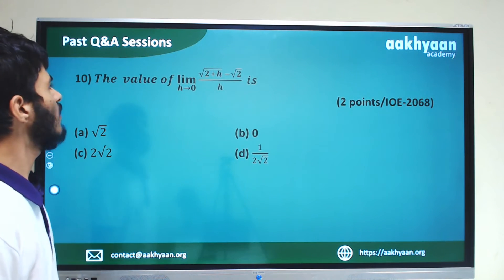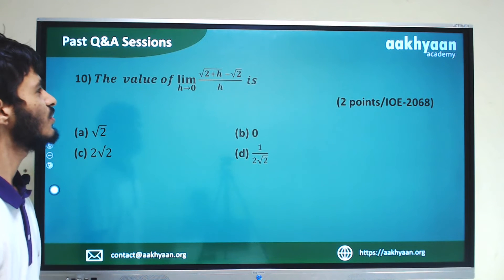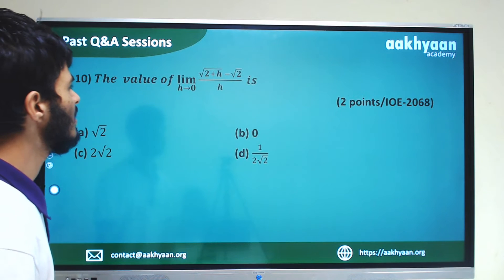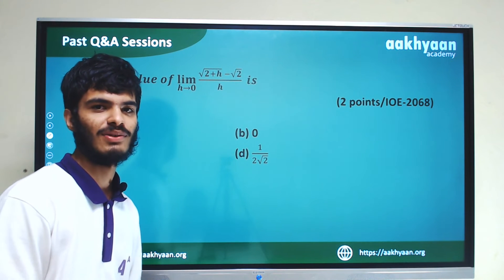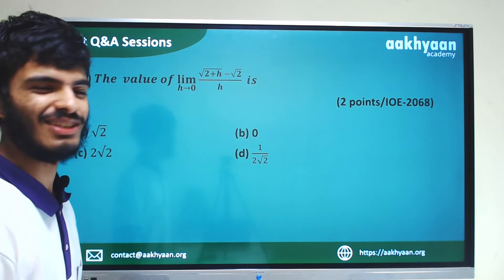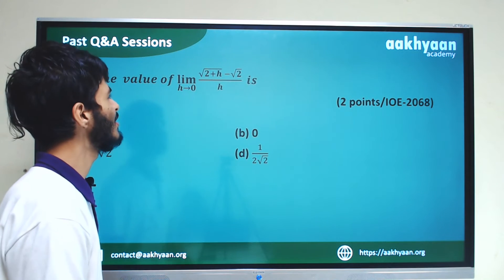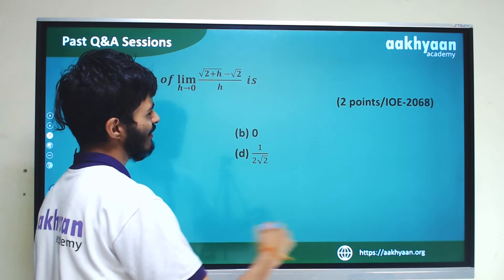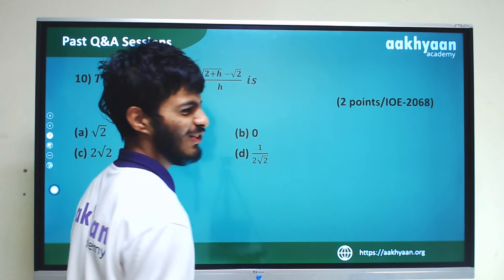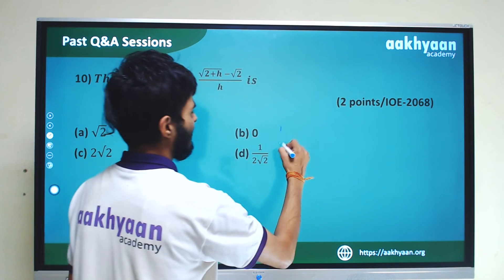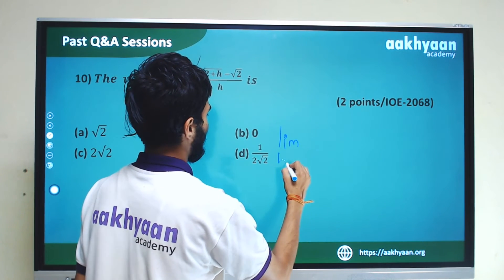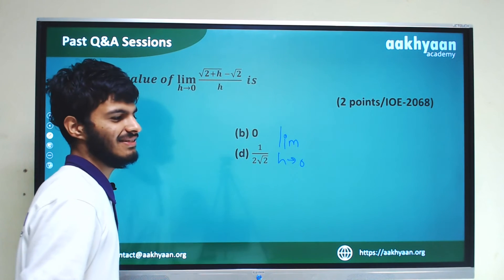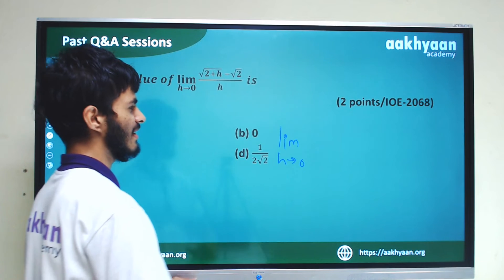The next problem: limit x tends to 0 of (root(2+x) minus root 2) by x. Putting x equal to 0 gives 0 by 0 form. So let's try the rationalization method by multiplying numerator and denominator by the conjugate.